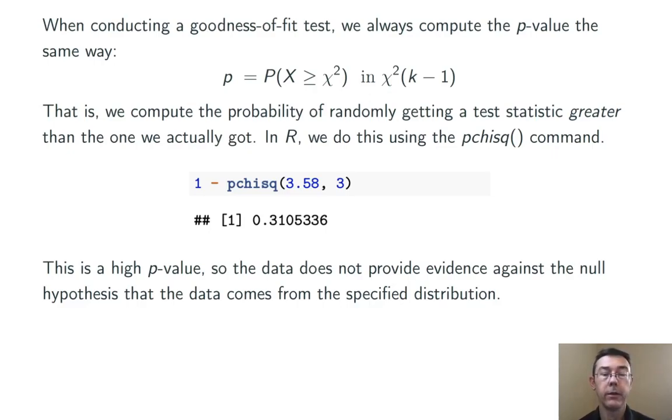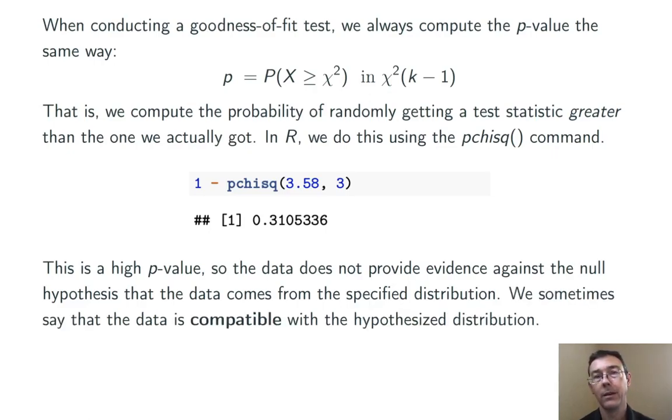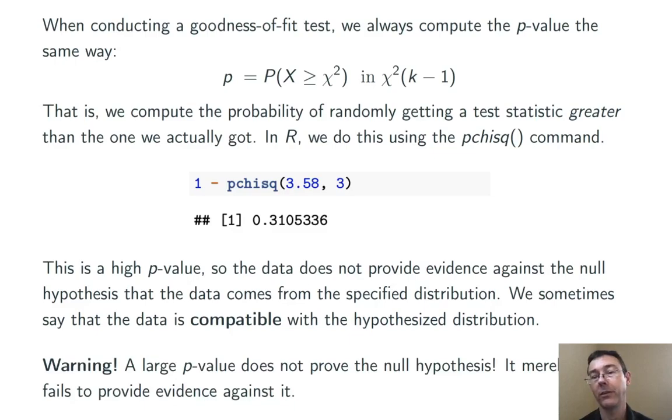That's a pretty high p-value. So this data does not provide good evidence against the null hypothesis that the data comes from the claimed distribution. Sometimes in a situation like this, we say that the data is compatible with a hypothesized distribution.